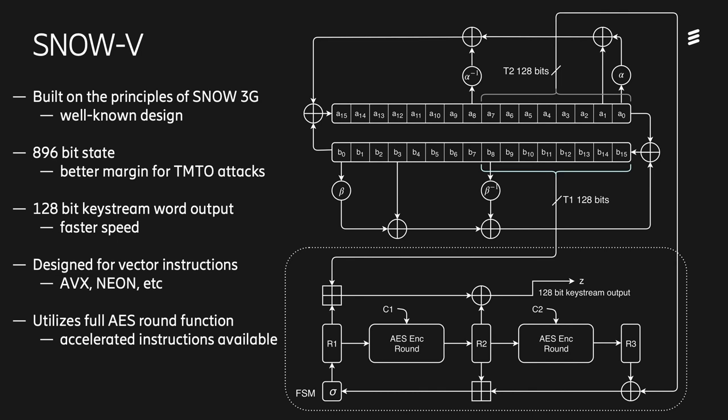At the top, we have a linear feedback shift register construction that is specifically designed for vector instructions like AVX or NEON. We have two taps, T1 and T2, feeding down into the finite state machine. The finite state machine uses two full rounds of the AES round function as large 128-bit S-boxes. That makes it possible to leverage the commonly available AES acceleration instructions found in most modern CPUs. The total state size of the cipher is 896 bits, which is larger than the previous 608 bits found in SNOW 3G, but still much smaller than four separate copies of SNOW 3G.